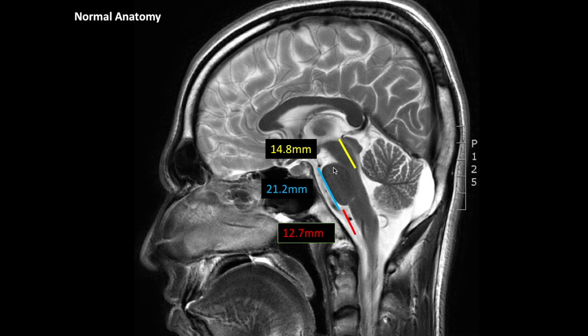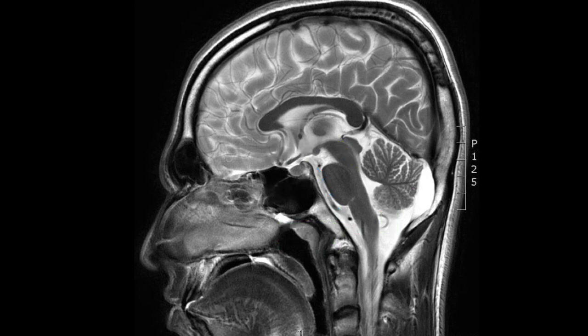The pons in vertical height should be at least one and a half to two times the height of both the medulla as well as the midbrain. This is really important in order to understand the developmental anomalies of the brainstem.